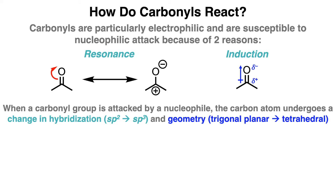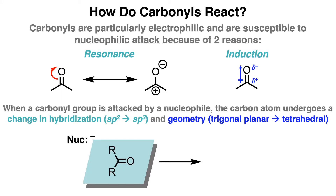When a carbonyl is attacked by a nucleophile at the electrophilic carbon center, the carbon undergoes a change in hybridization and geometry. The carbon atom in the carbonyl is sp2 hybridized since it has three groups connected to it, and it has a trigonal planar geometry. After a nucleophilic attack, however, the carbon atom of the product becomes sp3 hybridized since the nucleophile is now attached, and it has a tetrahedral geometry.